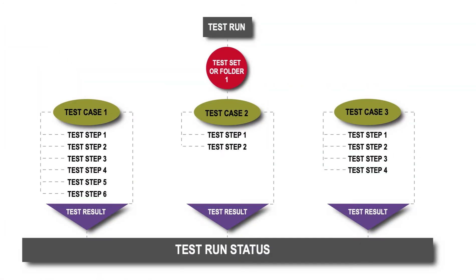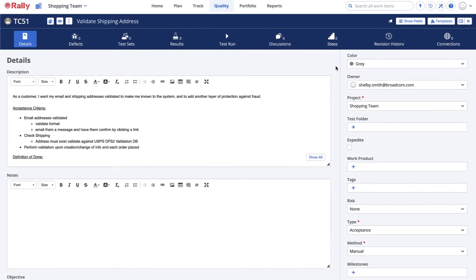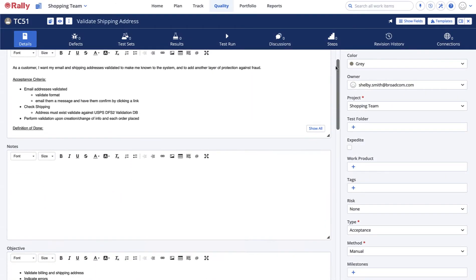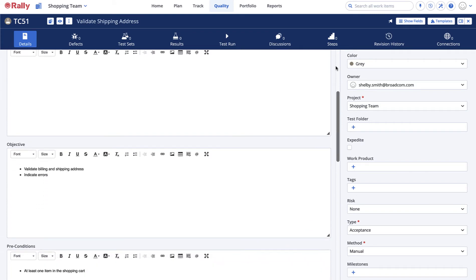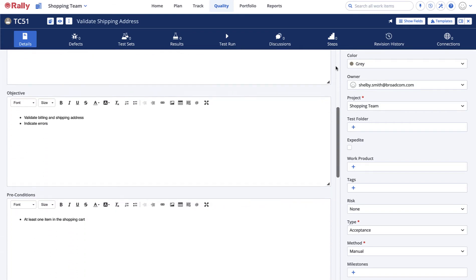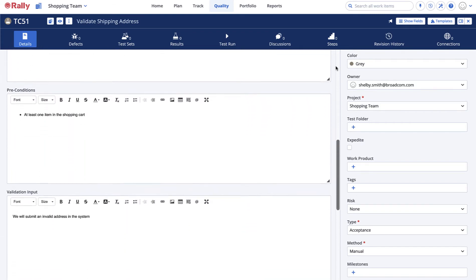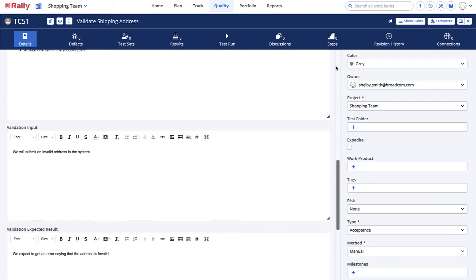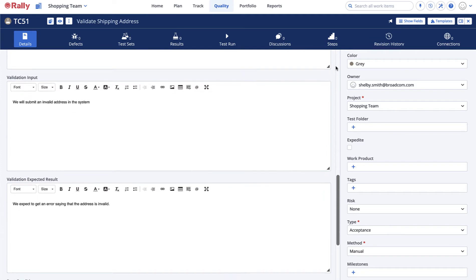Rally has several structures for organizing and using tests. Let's start with the test case itself, which defines how the system should perform according to the requirements. You define a test case using a description, objective, preconditions, validation input, expected result, and postconditions.